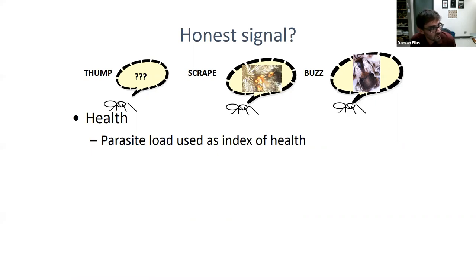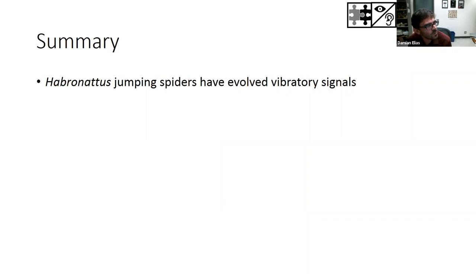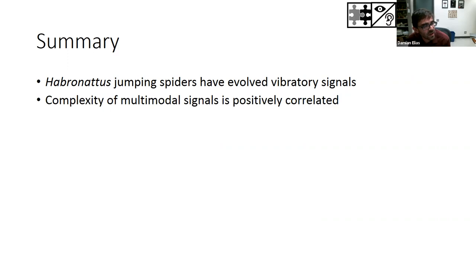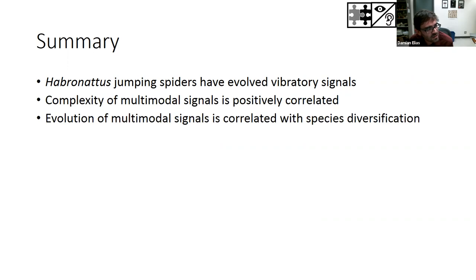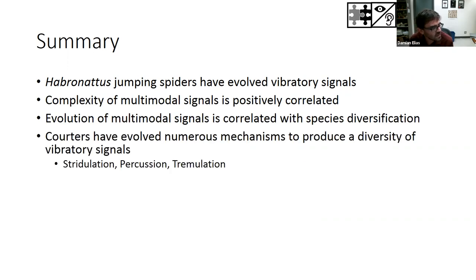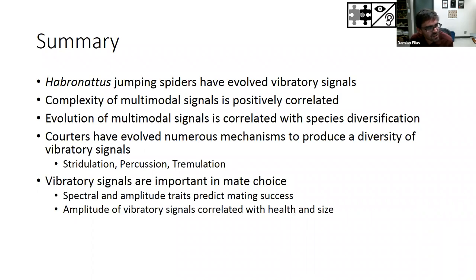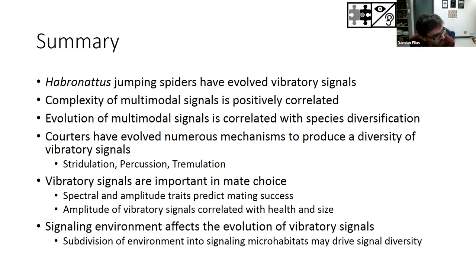What all this suggests is that different vibratory signals are potentially telling females different things about males. Importantly, all the amplitude signals kind of lump together, so females picking louder males may basically be picking ones that are larger and healthier. To summarize: Habronattus jumping spiders have evolved vibratory signals, the complexity of multimodal signals seems to be positively correlated, there's evidence that evolution of multimodal signals is correlated with species diversification, and vibratory signals are important to mate choice — spectral and amplitude traits are especially important.